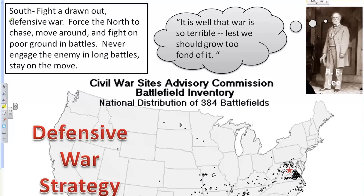Robert E. Lee's plan is very different — it's modeled after a strategy George Washington used to fight a defensive war, to never give up. This defensive war strategy by Robert E. Lee is going to prove very effective. He will have the opportunity to take advantage of the North and possibly win the war with inferior troops and numbers, but he will ultimately lose the war because of some moves he makes later on. Ultimately, these are the strategies of the Civil War.